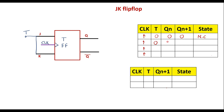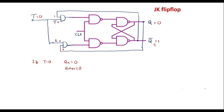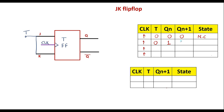Now let me consider T equal to 0 and Qn equal to 1 — the present state of the flip-flop is 1. Then Q bar will be 0. With T equal to 0, both J and K inputs are 0 — no change in the output. Therefore, Qn+1 equals 1 itself — no change. That is, Qn+1 equals Qn.